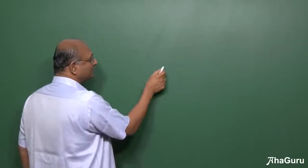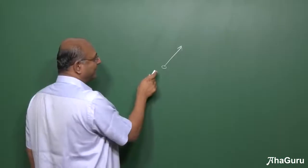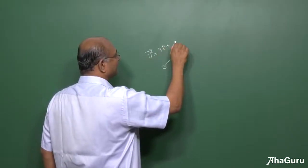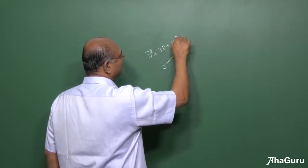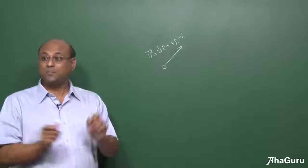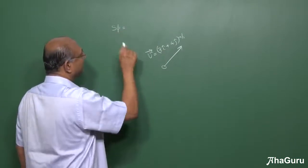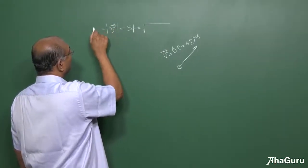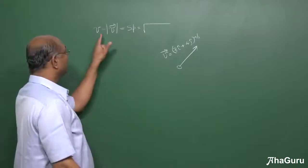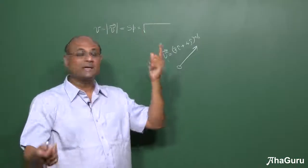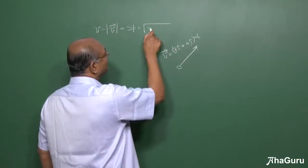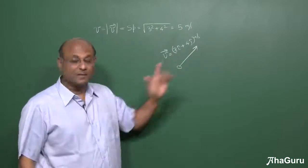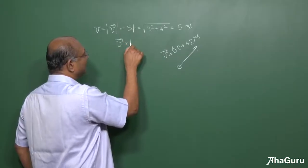Objects can be moving in any direction. If I tell you that an object has a velocity V — a vector — let's say 3i-cap plus 4j-cap meters per second. The first question: what is the speed of the object? Speed is the magnitude of velocity, so we don't need a separate symbol for speed. The magnitude is root of 3² plus 4², which is 5 meters per second.